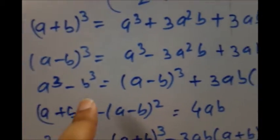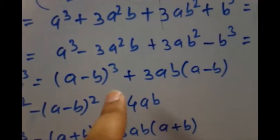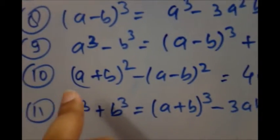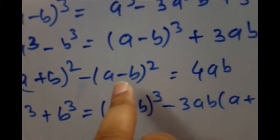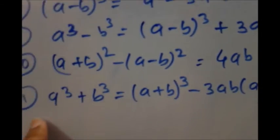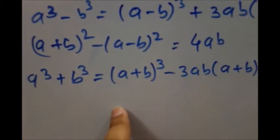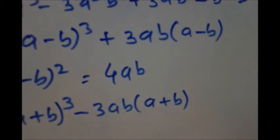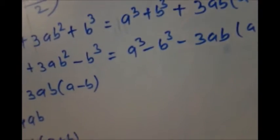Next: a³ - b³ = (a - b)³ + 3ab(a - b). Next: (a + b)² - (a - b)² = 4ab. And last: a³ + b³ = (a + b)³ - 3ab(a + b). If I have forgotten any formula, please send me a message and I will try to include it in the next video.